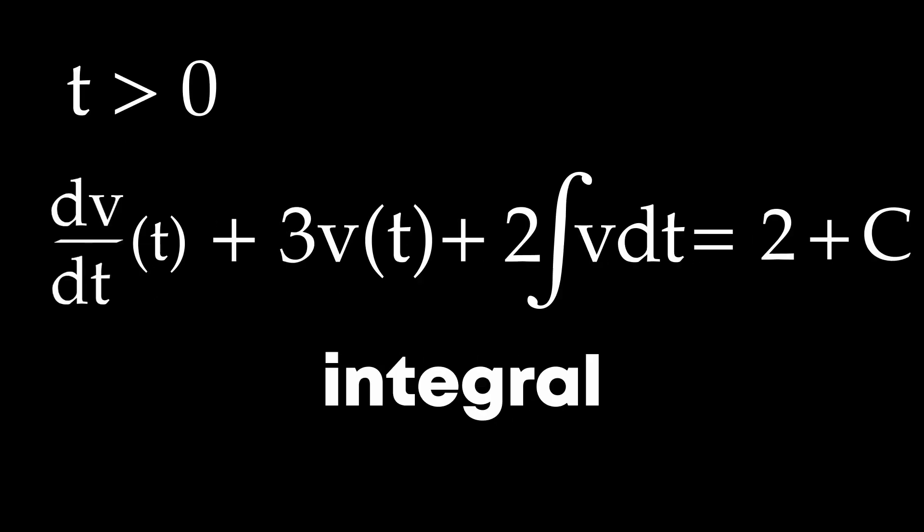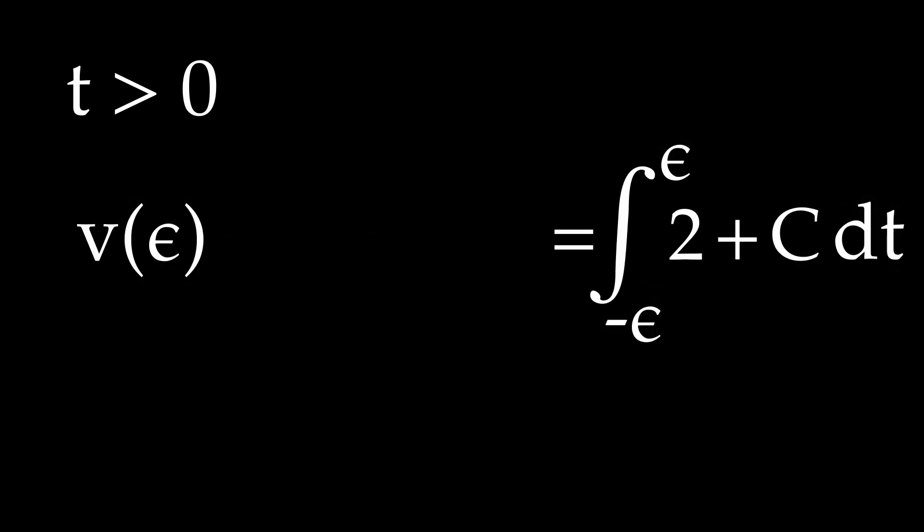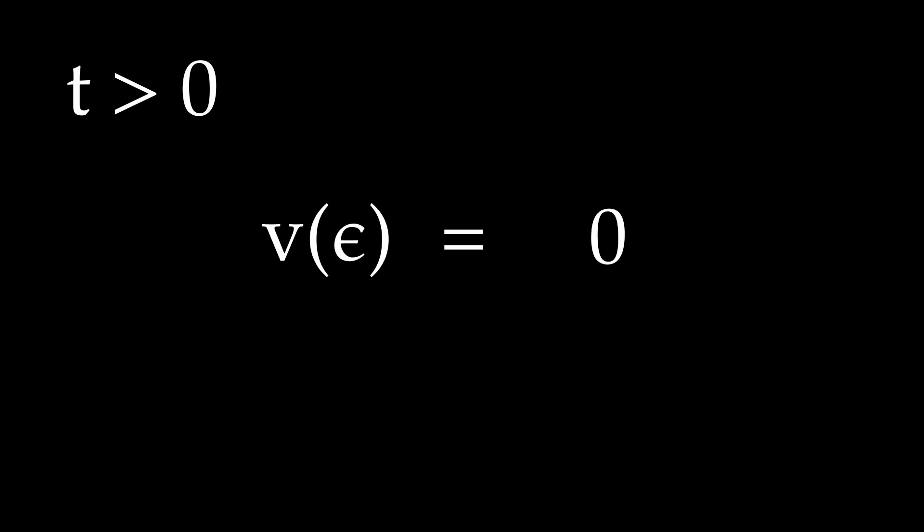If we now take the integral from minus epsilon to epsilon, then on the left hand side, the last terms die off. And on the right hand side, you'll get 0. Since the delta function has turned into 0 before t equals 0, and the one after,